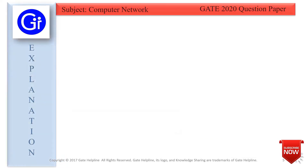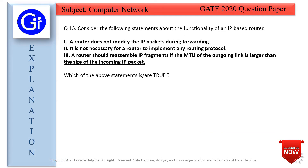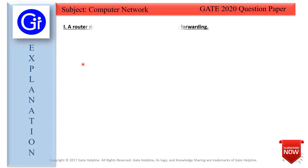We will now see the explanation to this question. We are given three statements and we need to tell which among them is true. Let's start with Statement 1 — a router does not modify the IP packets during forwarding. We need to find whether a router modifies IP packets or not, so first we will find out what an IP packet means.